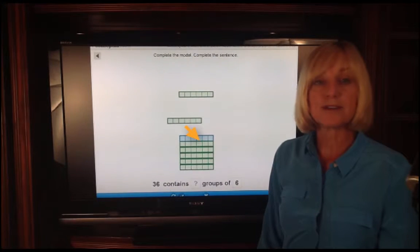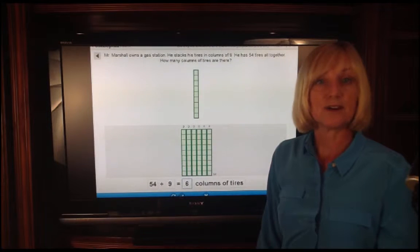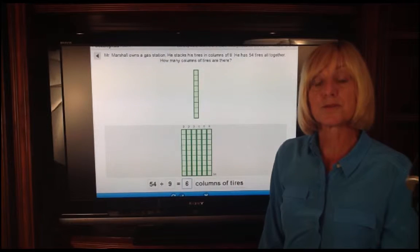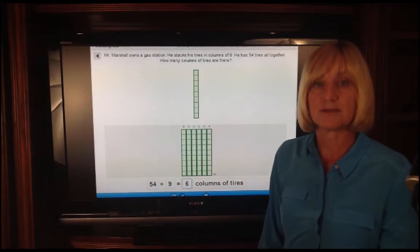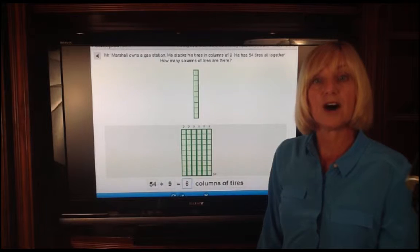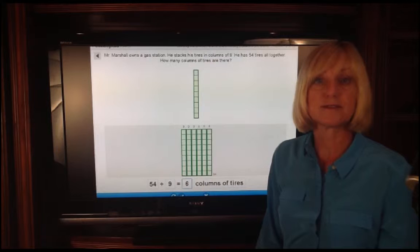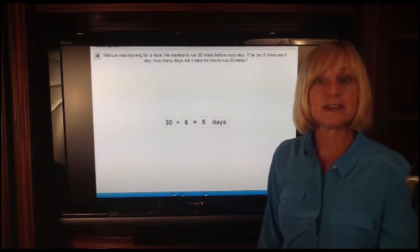They also work with multiple models to find out how many groups are contained in a starting amount. Stacked arrays, columns that build arrays, and they work with context. So they are going to use word problems, identify the unit that the quotient represents. Other words that represent groups would be rows, baskets, miles. And at the end of that second week, they are working with numbers only.